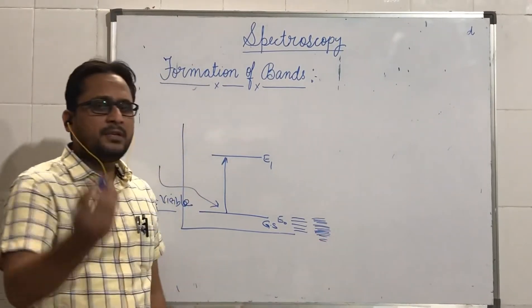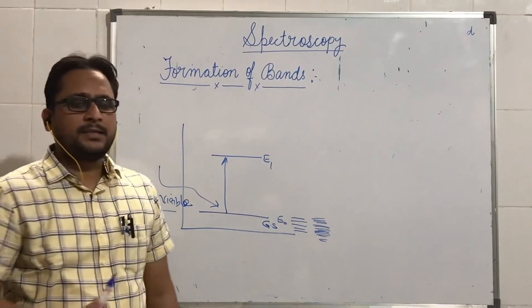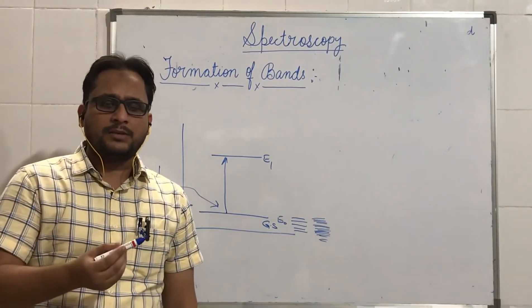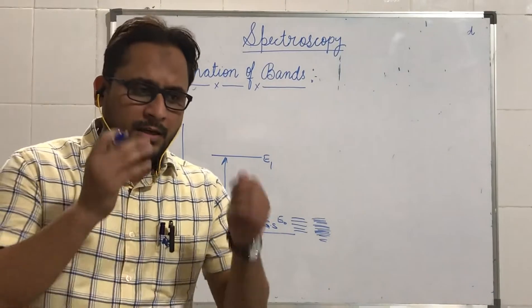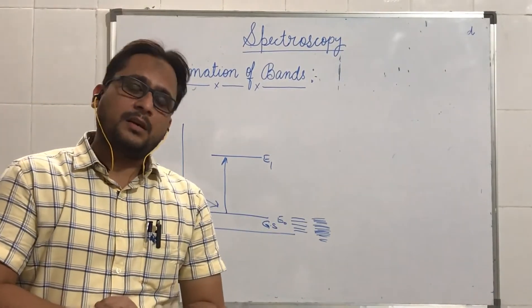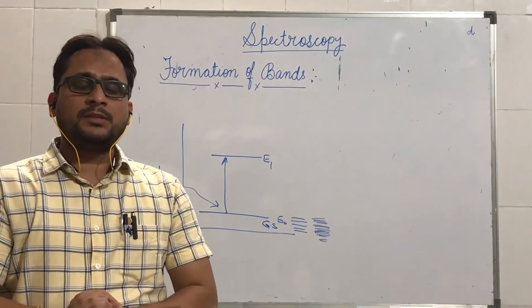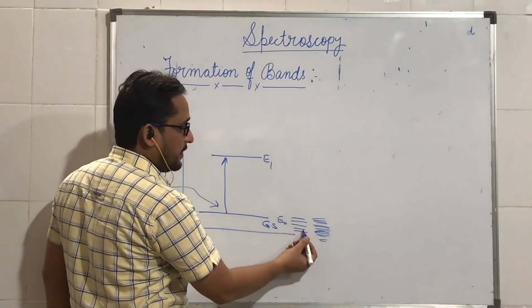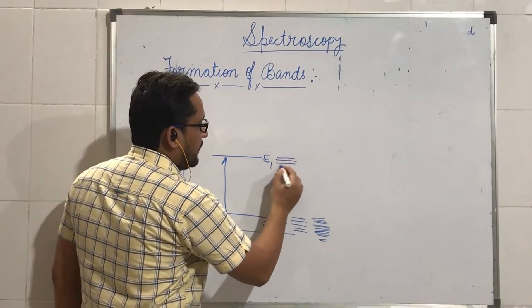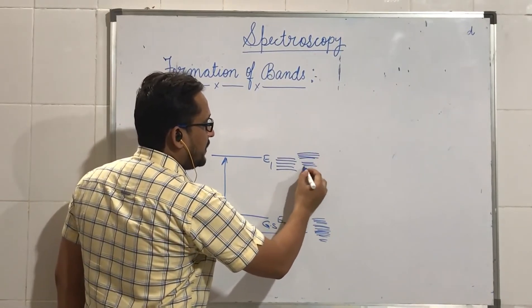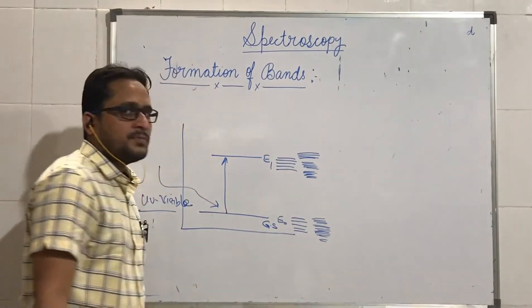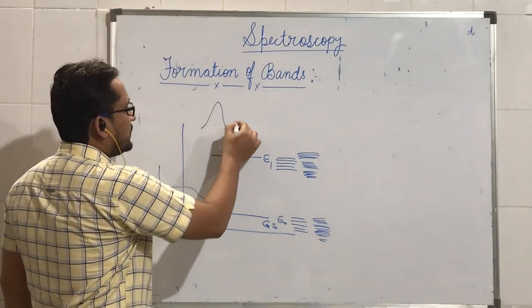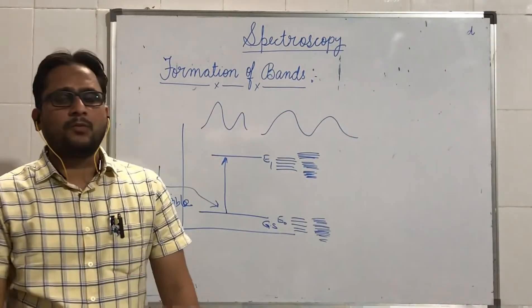Whenever there is an electronic transition from ground state to excited state, it always occurs simultaneously with a vibrational transition as well as a rotational transition. So instead of only an electronic transition occurring, there are three types of transitions occurring simultaneously: rotational transition, vibrational transition, and electronic transition. The electron will reach the excited vibrational, excited rotational, and excited electronic level. This is the reason that instead of sharp peaks, we observe broad bands in ultraviolet spectroscopy.